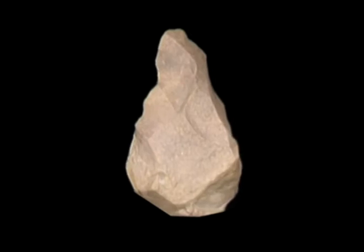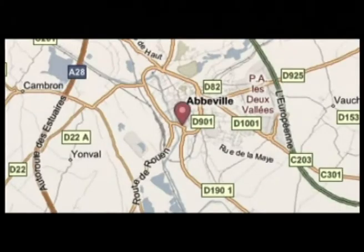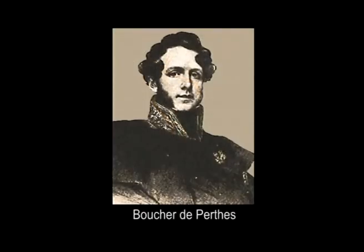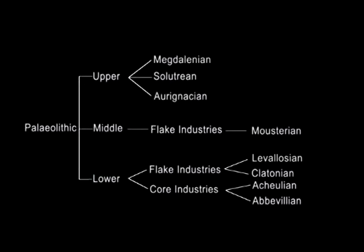Now let us look at different types of stone tools. First is the hand axe. The hand axe is considered an all-purpose tool. It is a bifacial tool and is one of the earliest tools, found in Abbeville in France by Boucher de Perthes in 1836. It is a diagnostic tool of the lower Paleolithic industries such as Abbevillean and Acheulian, and one of the varieties of Mousterian.